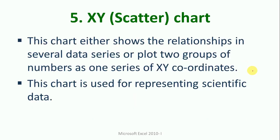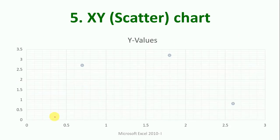The fifth chart is the XY scatter chart. This chart either shows the relationship in several data series or plots two groups of numbers as one series in XY coordinates. This chart is used for representing scientific data — for engineering calculations and scientific purposes. The values are drawn on the chart using X and Y coordinates, where each data point represents where the X and Y values meet.